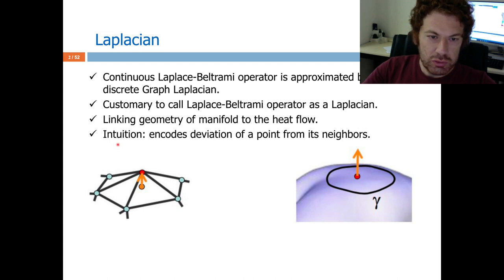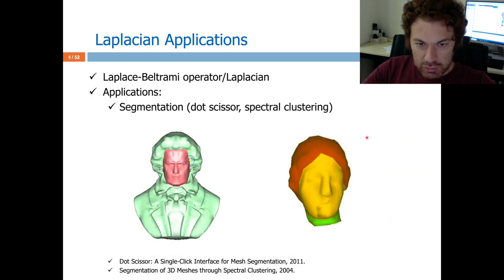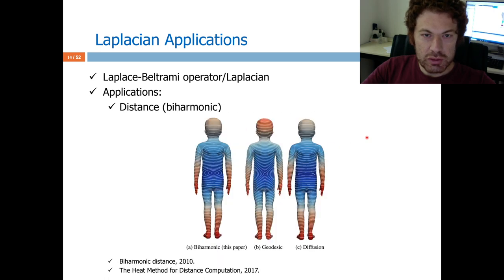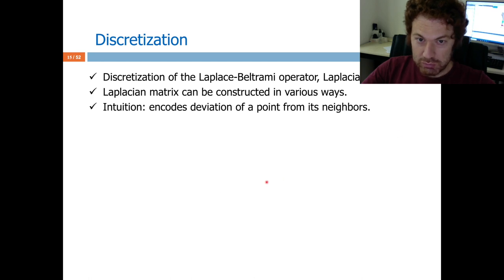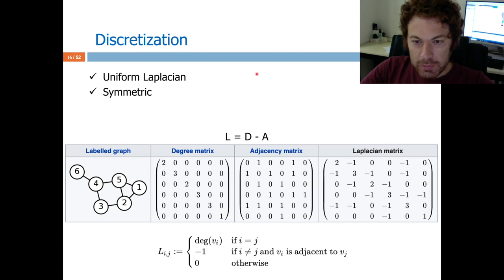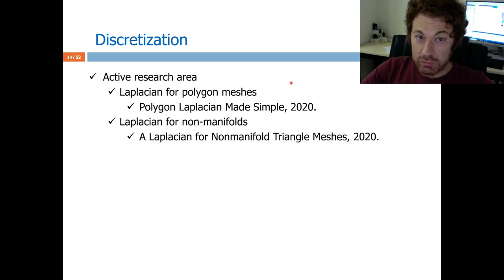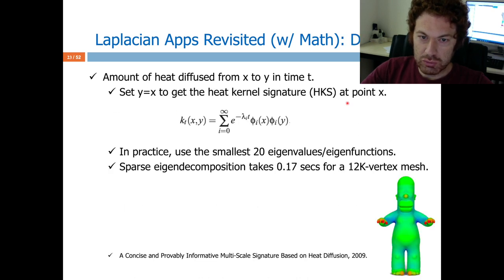I will first talk about the applications where Laplacian is directly involved — a high level, mild start — and then I will talk about the math involved to make those applications possible. I will focus on some in detail and some I will keep light. Toward the end, I will give you the discretization and the Laplacian matrix, the graph Laplacian, different versions, and then I will do the math where I get the spectrum and put it in action to revisit some applications with more details.